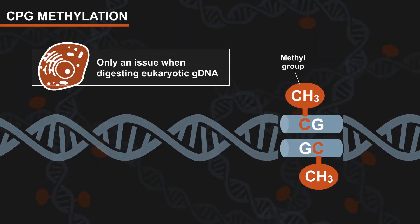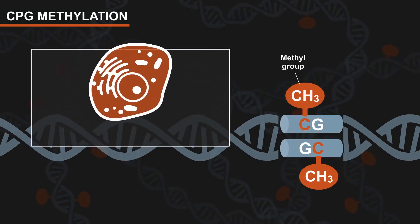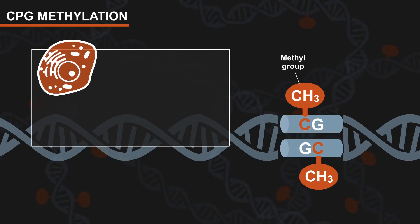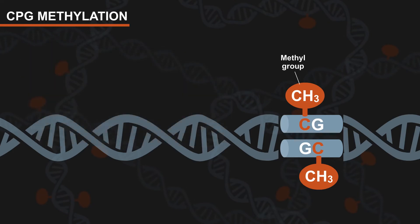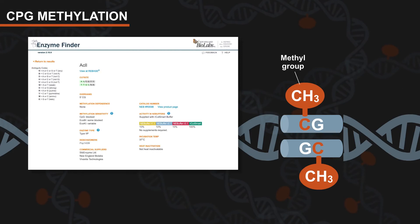CpG methylation is only an issue when digesting eukaryotic genomic DNA. When working with DNA from a eukaryotic source, you may want to choose an enzyme that is not impacted by CpG methylation or amplify a region of the DNA. You can also use NEB's interactive tool, Enzyme Finder, to search for alternative restriction enzymes.